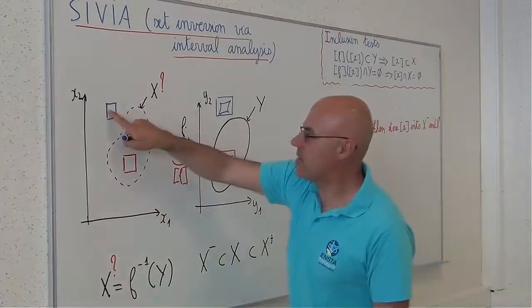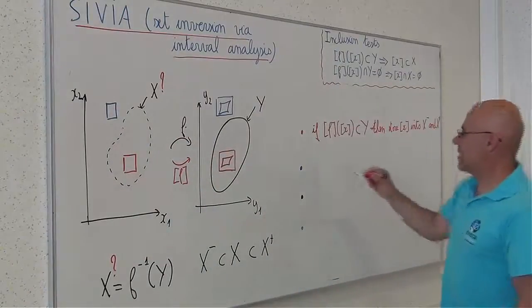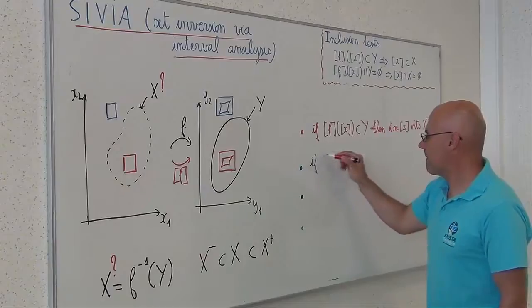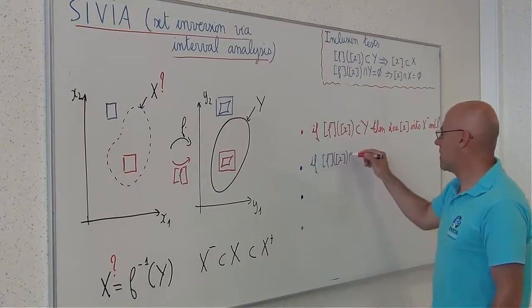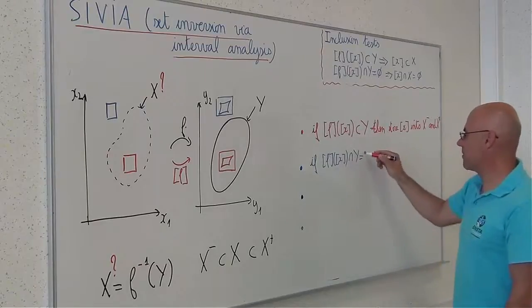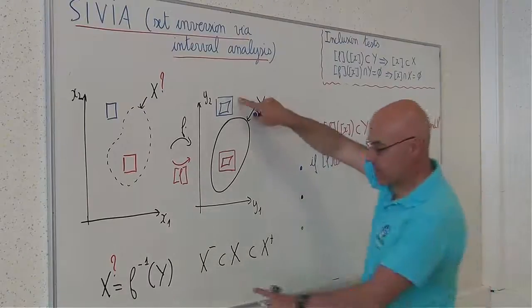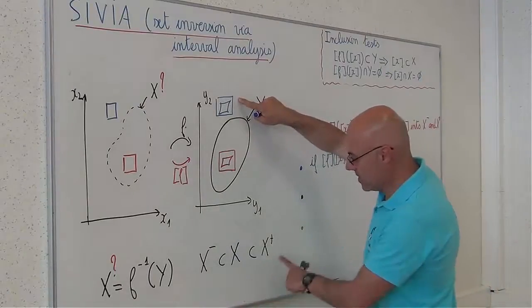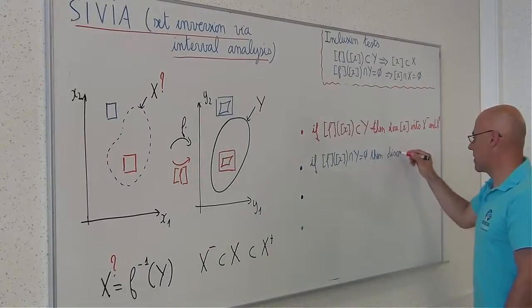So if f of x does not intersect y, then I will not store it neither in x minus, neither in x plus. So I discard it.